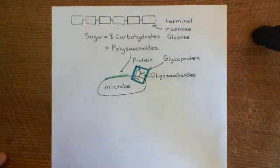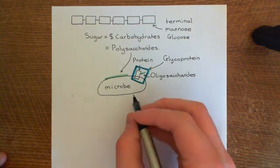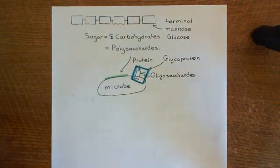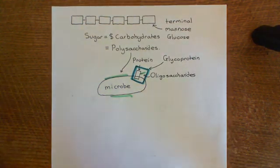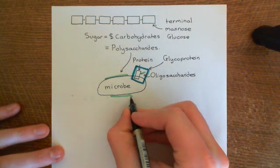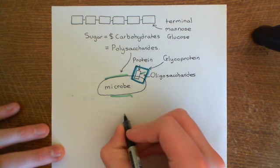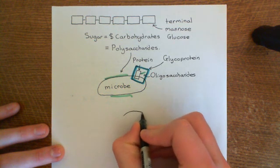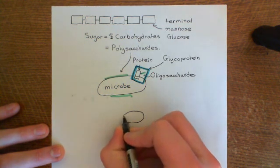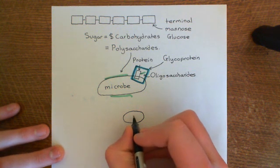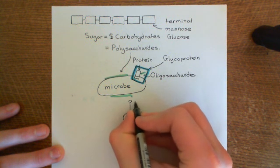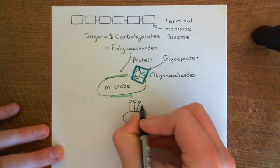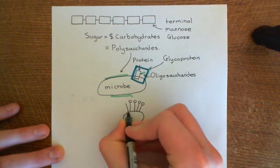I'm now going to draw the mannose-binding lectin complex slightly simpler. I'm going to show our microbe here with the polysaccharide here, and let's say it's got this terminal mannose or glucose monosaccharide. I'm going to draw the mannose-binding lectin complex just as a blob, which represents the MASP1 and MASP2 proteins, and then we'll have these heads coming off — two of these heads, and then a few more so that we have six of them. These are the heads of the mannose-binding lectins.